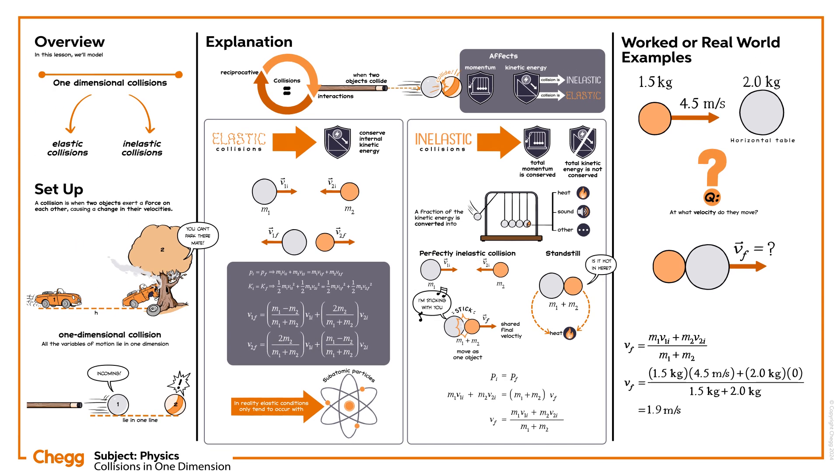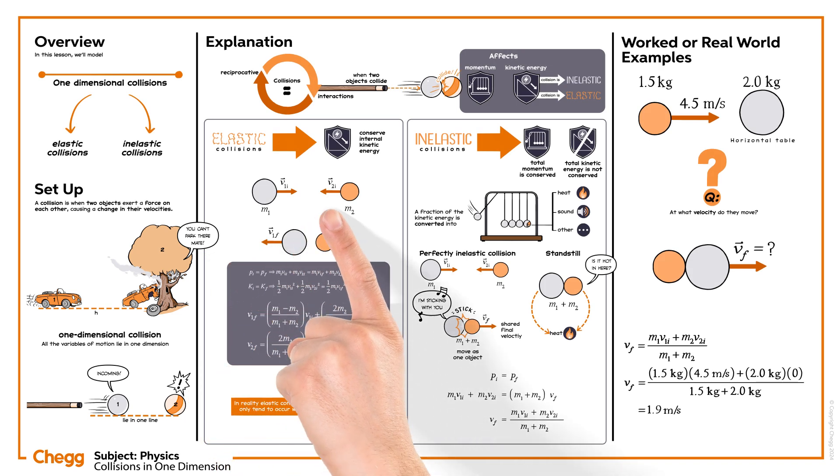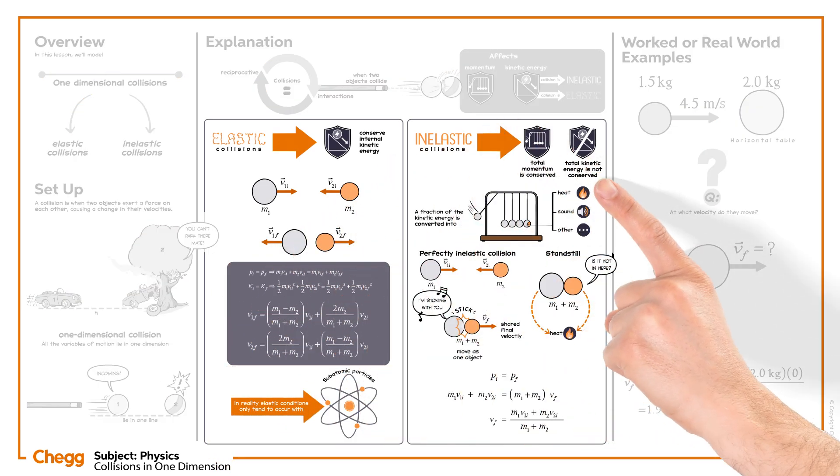We have learned that the collision in one dimension is the collision between two objects in a single direction, and that such collision can be elastic or inelastic, depending on the total kinetic energy conservation.